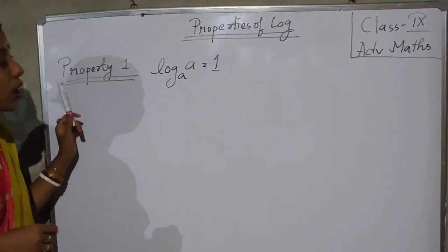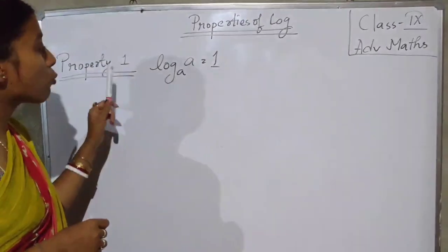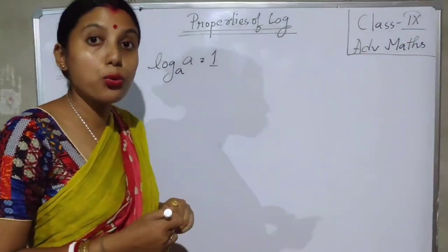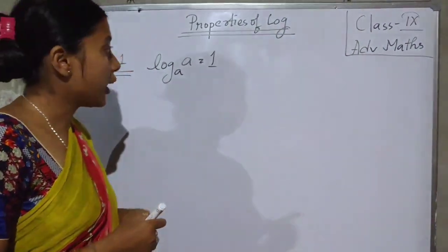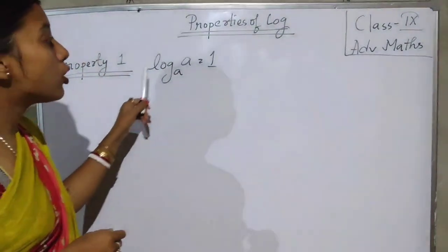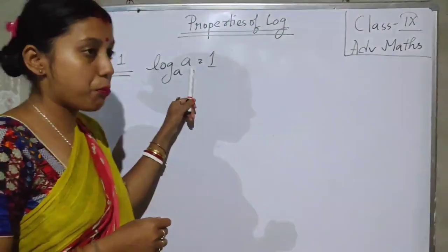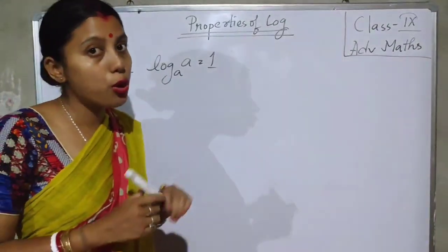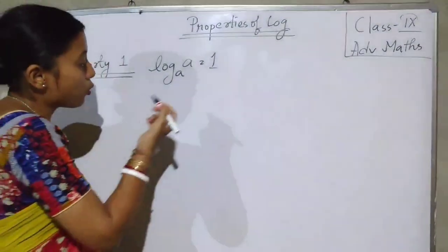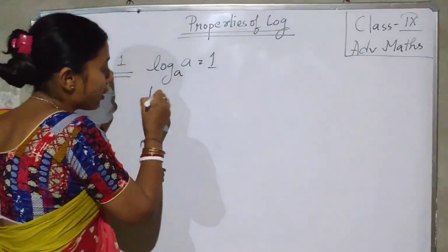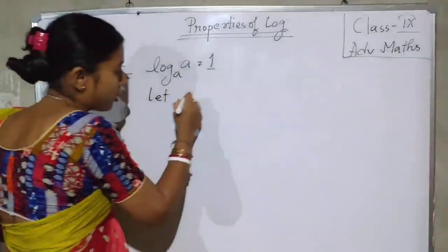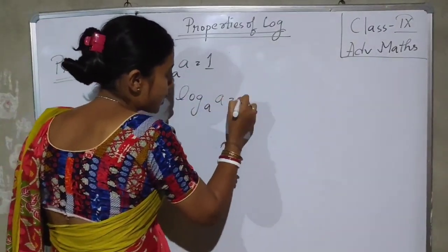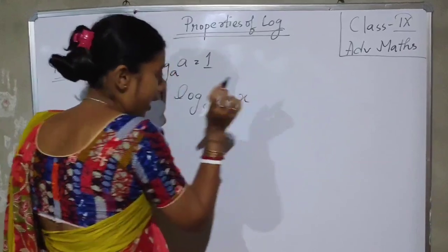Property 1: log A base A is equal to 1. Log of any number at the same base is equal to 1. So, how will we get it? Let us take log A base A is equal to x.